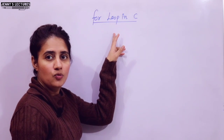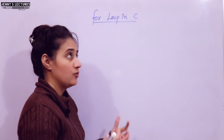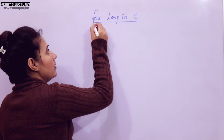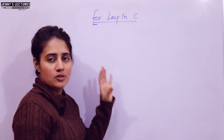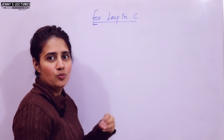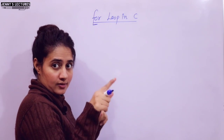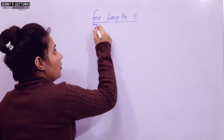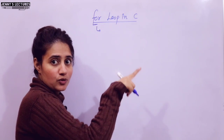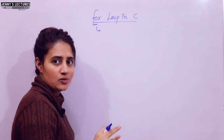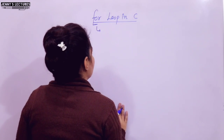I hope you know why we use loops in C. When you want to execute a statement or many statements multiple times repeatedly, then for that we use looping statements in C. The for loop is the most popular loop - every programmer uses it. It has many advantages over while loop and do while loop. This is an entry controlled loop. While is also entry controlled, whereas do while is an exit controlled loop.